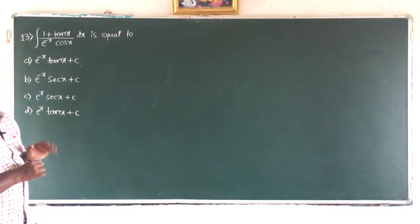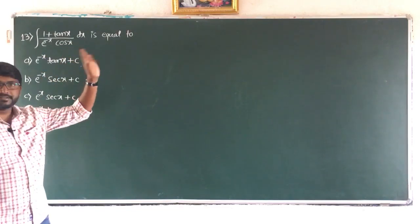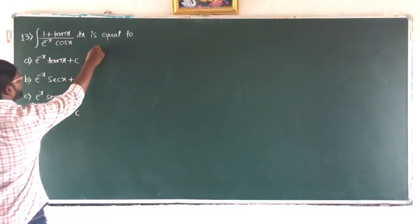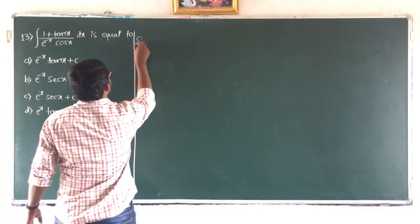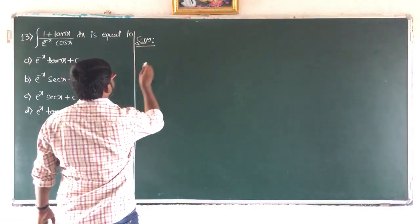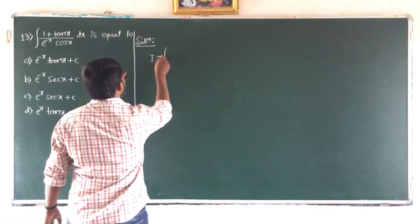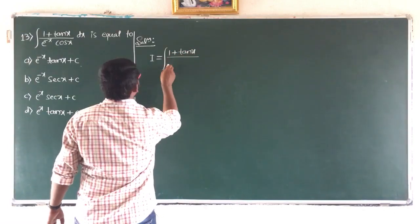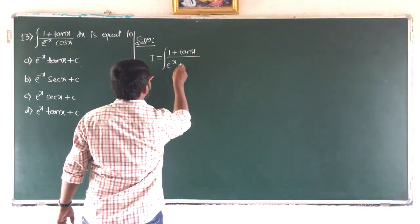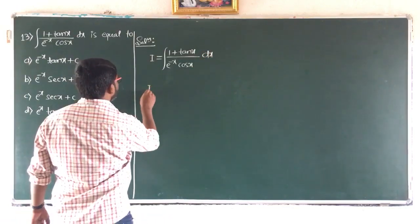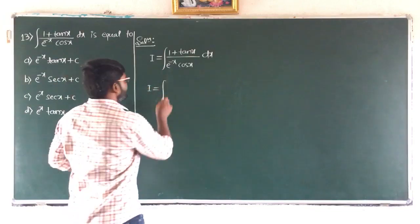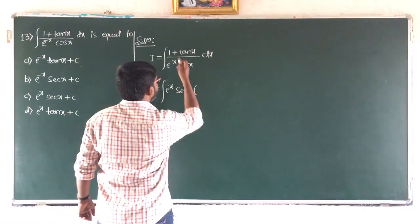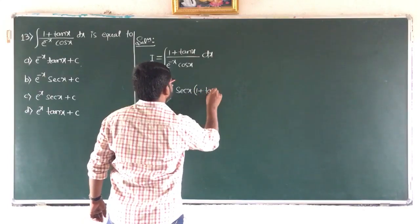The next question: integral of (1 plus tan x) divided by e^(minus x) · cos x dx is equals to. This question was asked in 2005. We will write the given integral: I equals integral of (1 plus tan x) divided by e^(minus x) · cos x dx. Now, e^(minus x) in the denominator becomes e^x in the numerator, and 1/cos x becomes sec x.